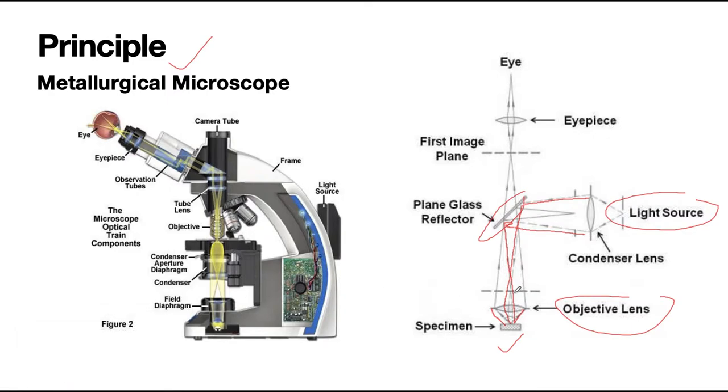So some of these lights which fall on the specimen get reflected from the specimen surface and will be magnified and pass through the plain glass reflector and magnified again by the upper lens of the system. This is the upper lens of the system and the magnified image can be seen through the eyepiece. So this is how a metallurgical microscope works.